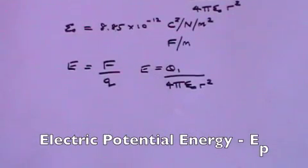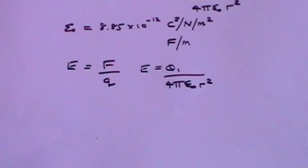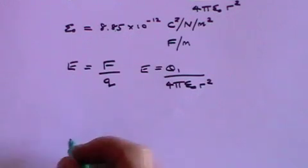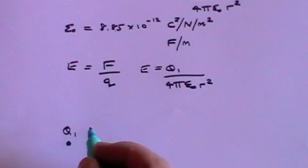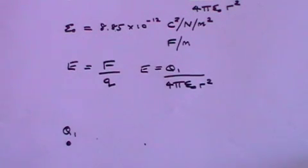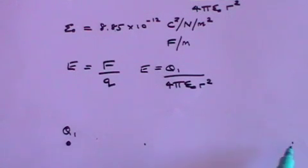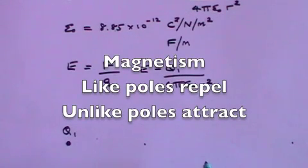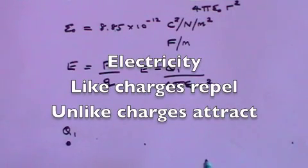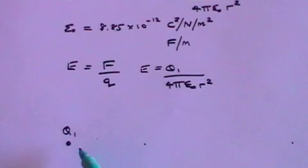Now we come to electric potential energy, which is the work done to bring a test charge little q from infinity to a point r away from a main charge. Here's a main charge q1, and we have a charge right out at infinity, and we're going to bring that charge in. If both charges are positive, like charges repel, so if we want to bring q to a point r away we're going to have to do work to overcome the repulsive force.